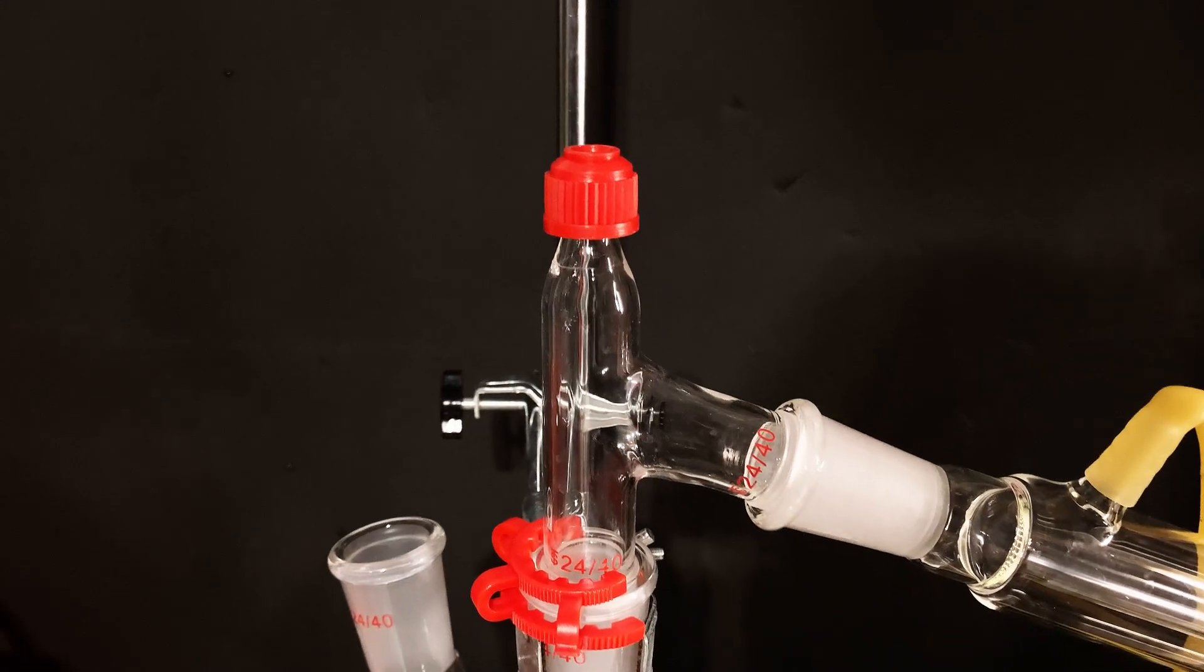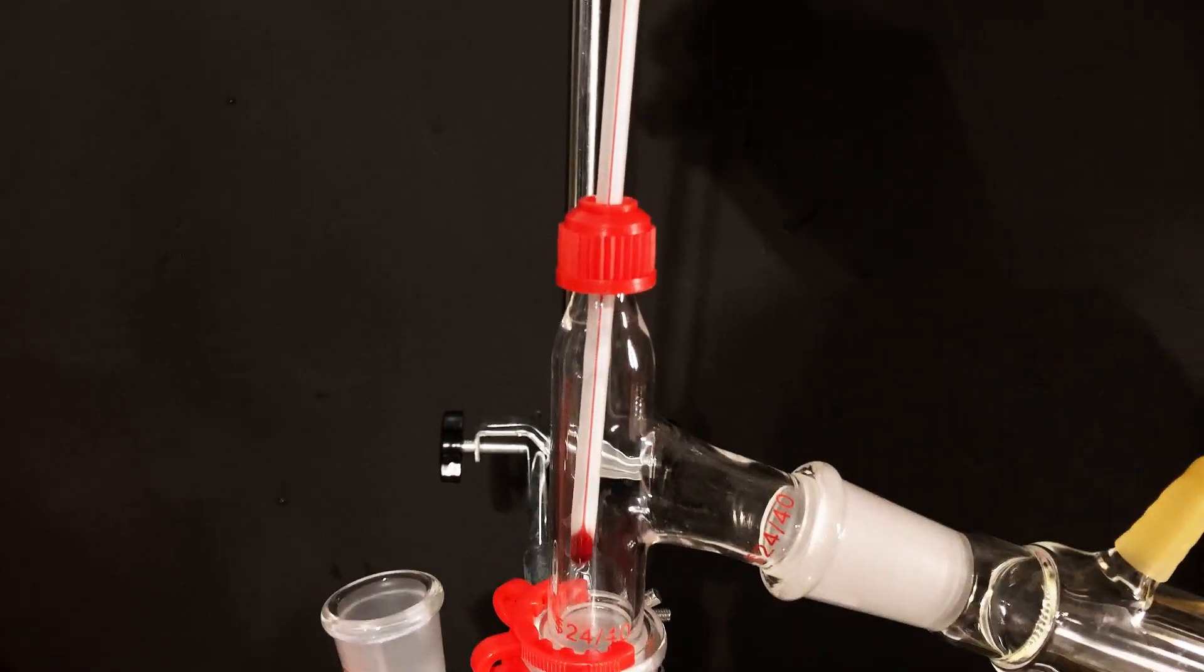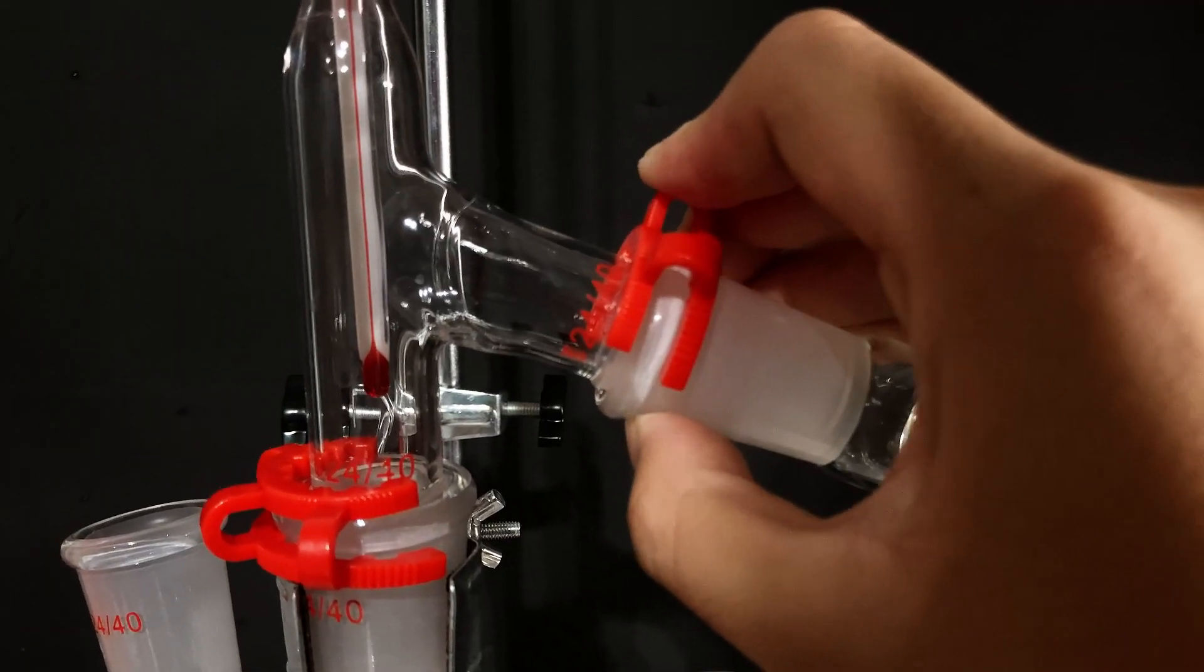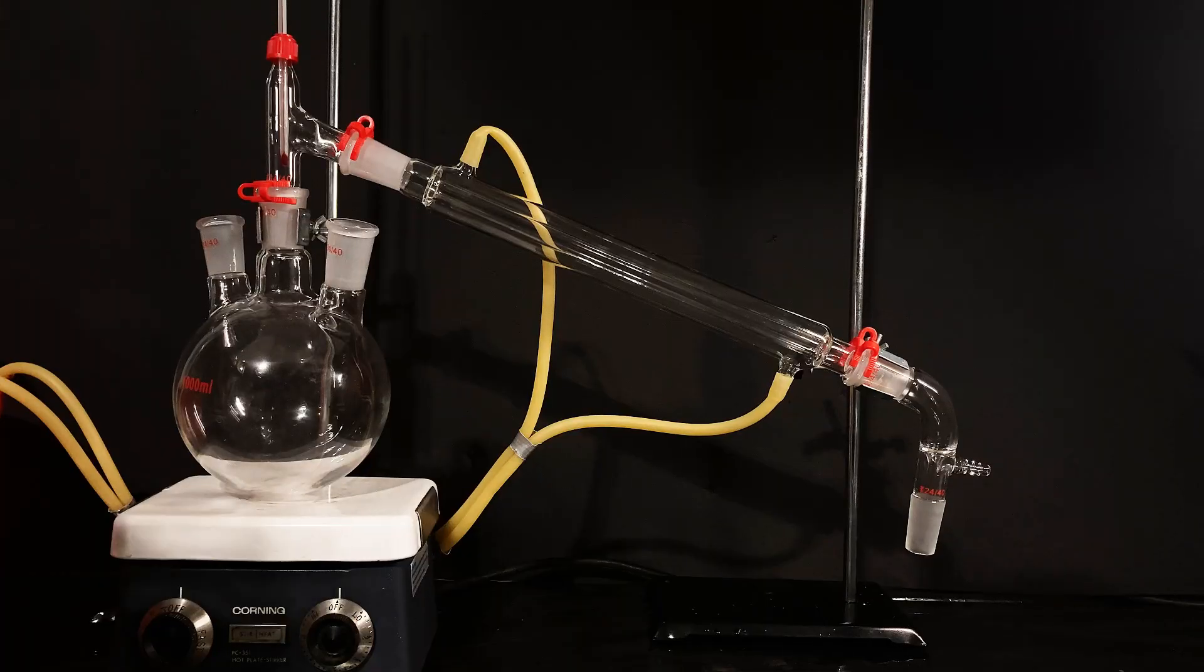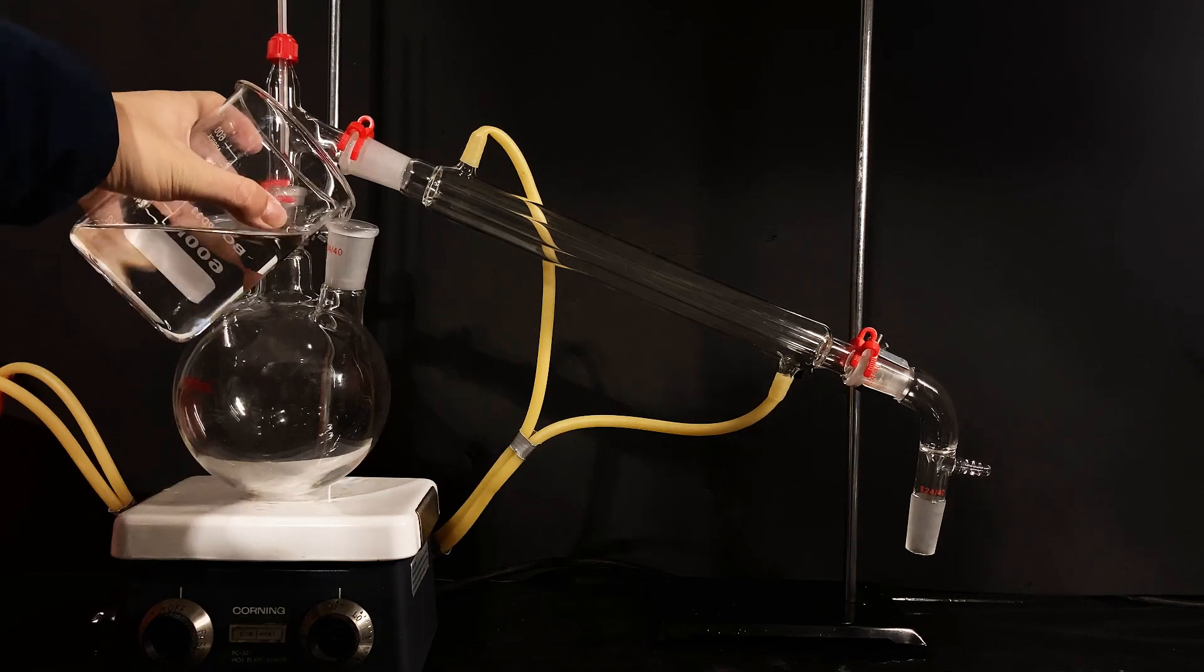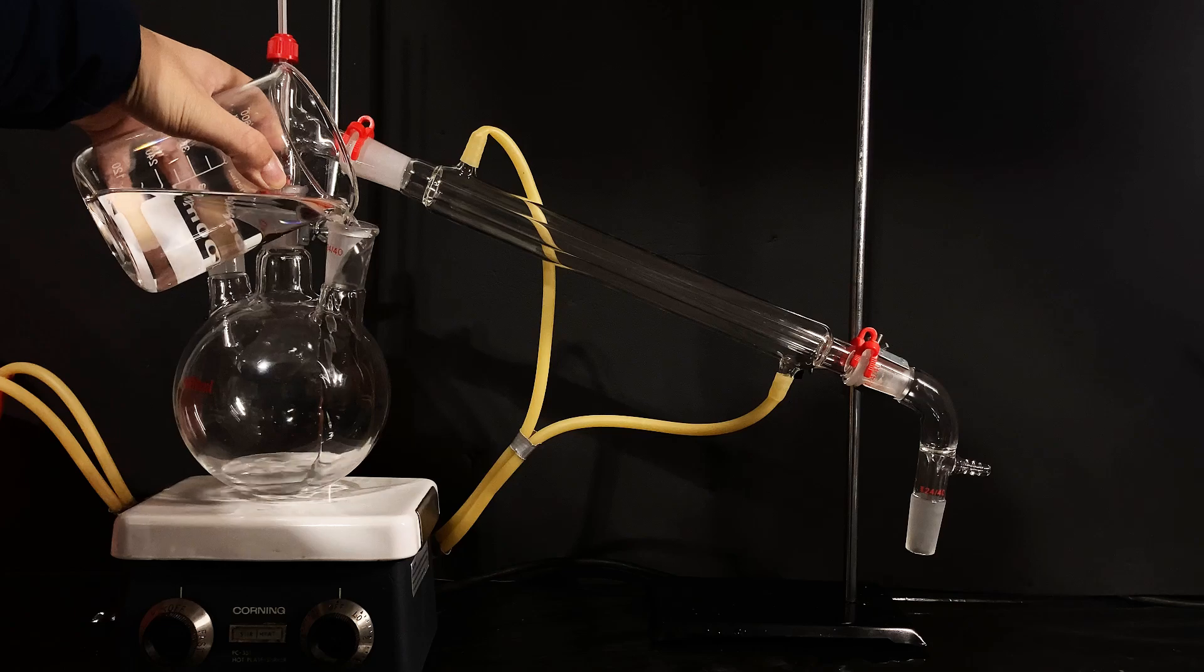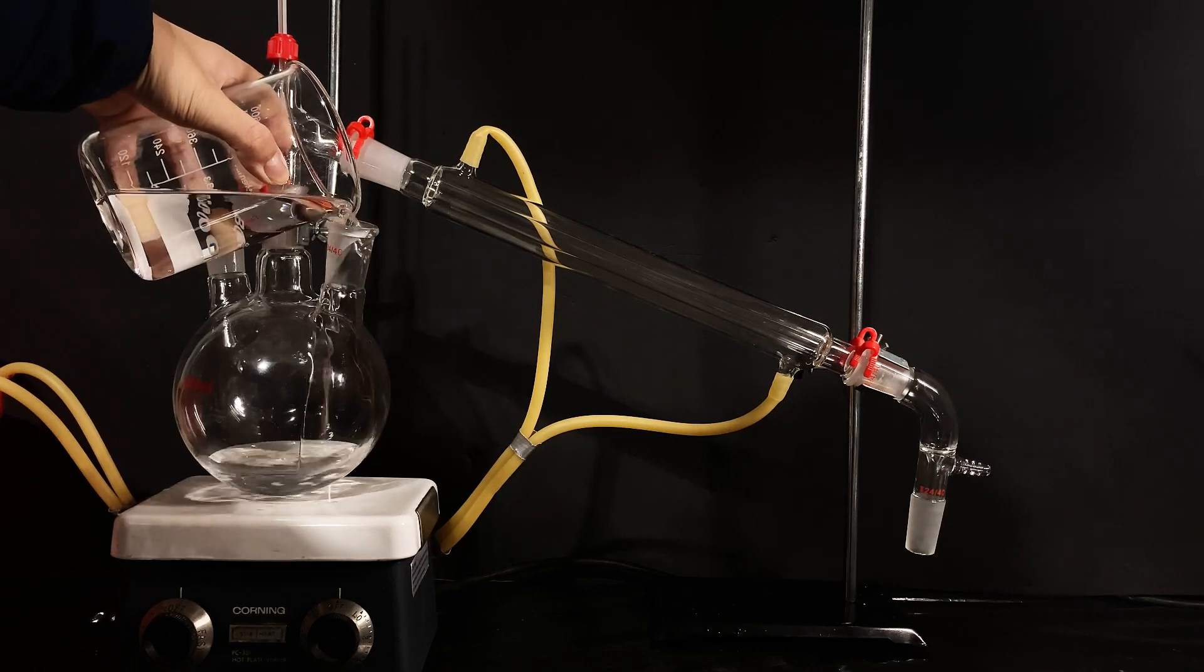If you're asking what that means, an azeotrope is essentially when the concentration of the substances are the same in the vapor phase as the liquid phase, and are inseparable by simple distillation. The two substances act as one, and in this case, it has a lower boiling point than either of the two substances.